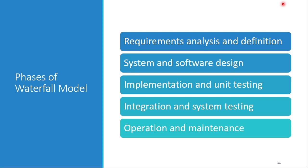The main drawback of the waterfall model is the difficulty of accommodating change after the process is underway. For example, if you are at system and software design, you cannot go back to change requirements — waterfall only flows downward. You can only make changes when you reach the maintenance phase, then start a new version. In principle, a phase must be complete before moving on to the next phase.